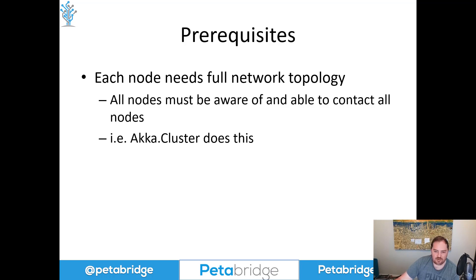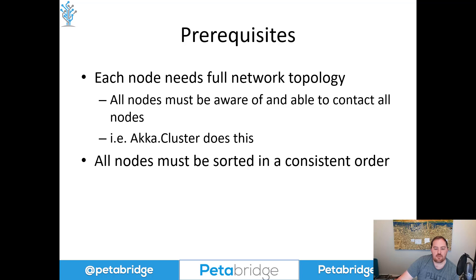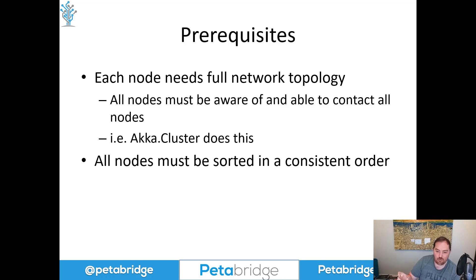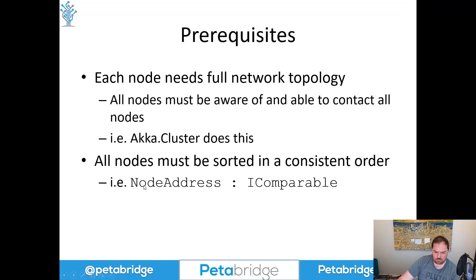That's one of the libraries we produce here at Petabridge — it's a C-sharp library. It gives you the ability to form your arbitrary networks of .NET processes together using the Akka.NET distributed actor runtime. So you need that network topology first. The second thing you'll need is that all the nodes in your topology need to be sorted in some type of consistent order. If you don't do this, the hash graph is going to look different for every single node, meaning that who owns a particular range of data won't be the same on every node, defeating the purpose of consistent hashing. The solution is simple — your address class needs to implement the IComparable interface so all nodes sort in a consistent, uniform order throughout the cluster.